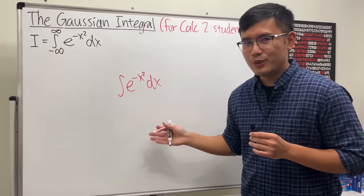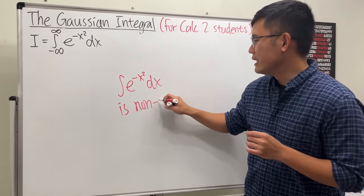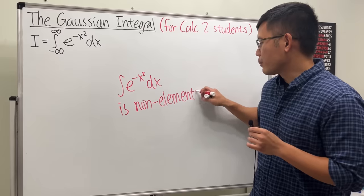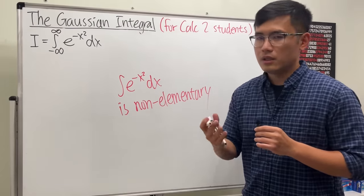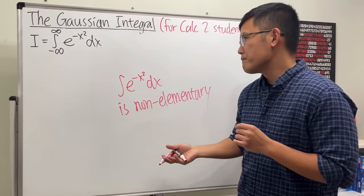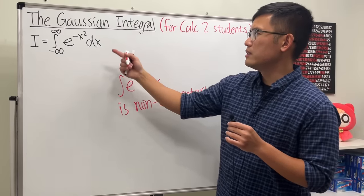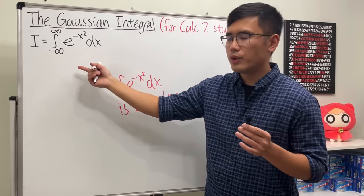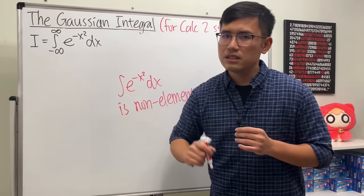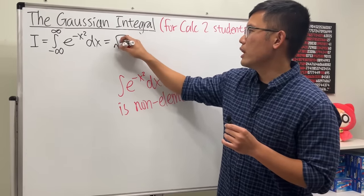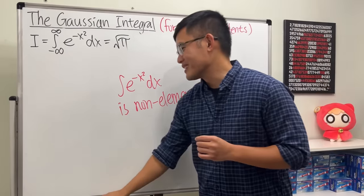We cannot do it with regular functions — we call this non-elementary. If you want to see how to approach this using advanced functions, you can check out my video in the description. We cannot even find an antiderivative of this. However, this integral goes from negative infinity to positive infinity and it does converge very nicely to the square root of pi.